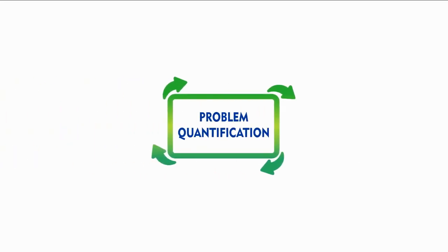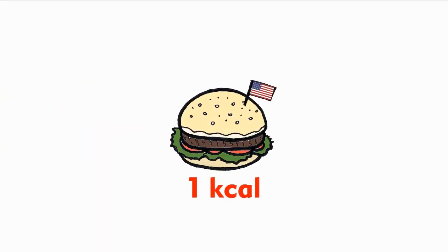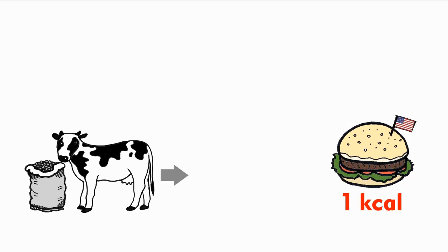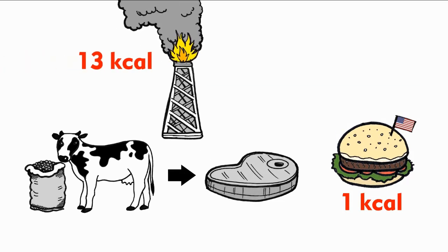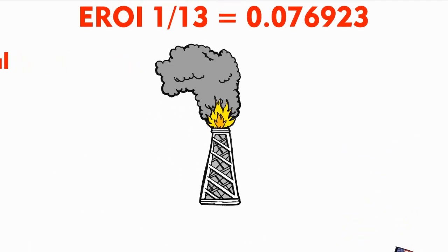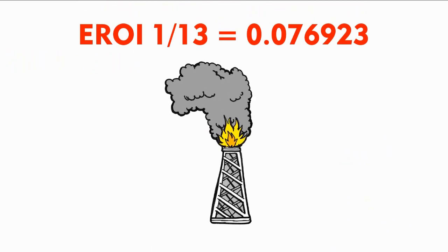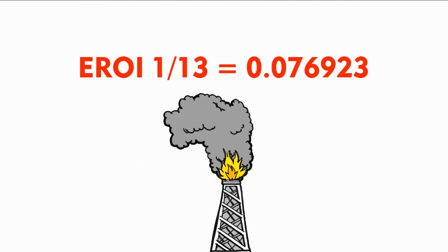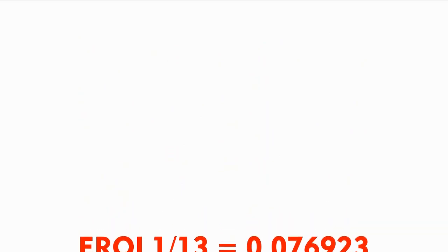Problem quantification. For every calorie consumed in the U.S., the equivalent energy of 13 calories of oil is burned to produce it. Such a low energy return on investment is what makes the agri-food industry accountable for a quarter of human-caused greenhouse gas emissions yearly.